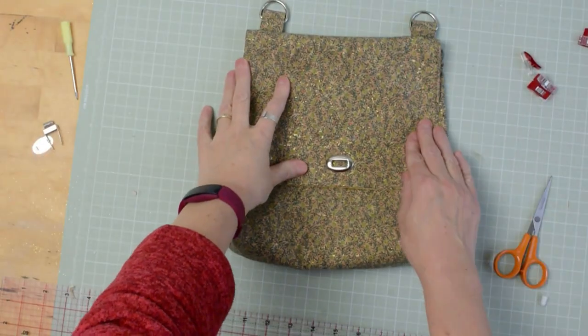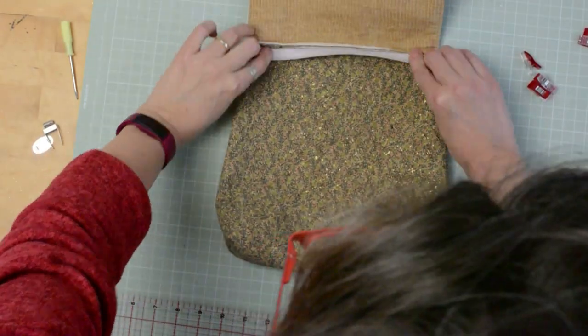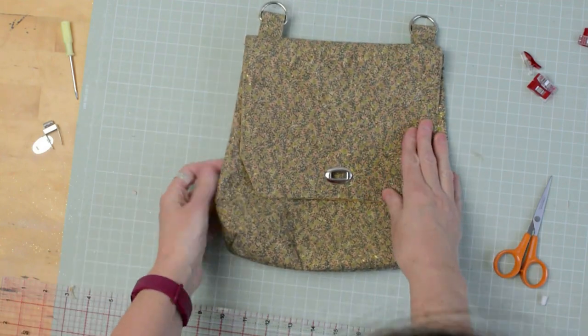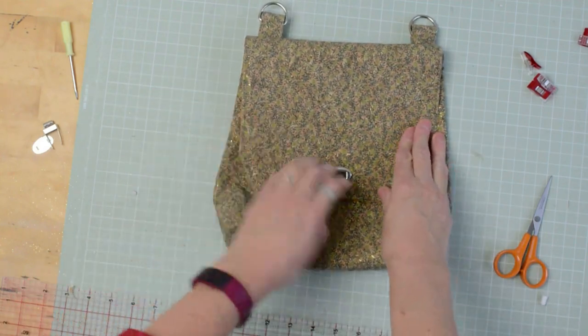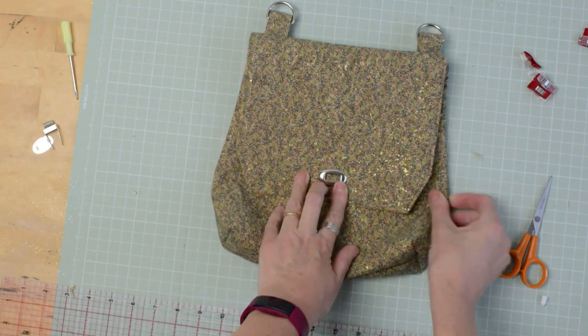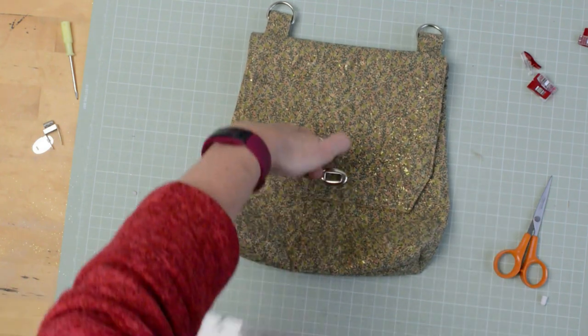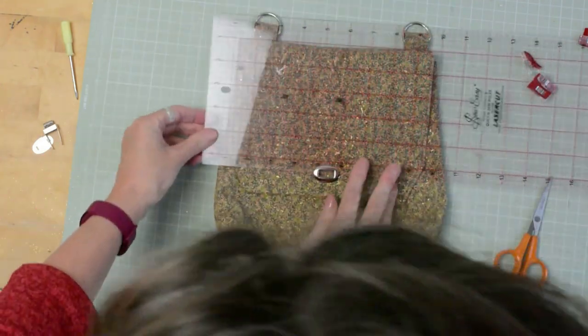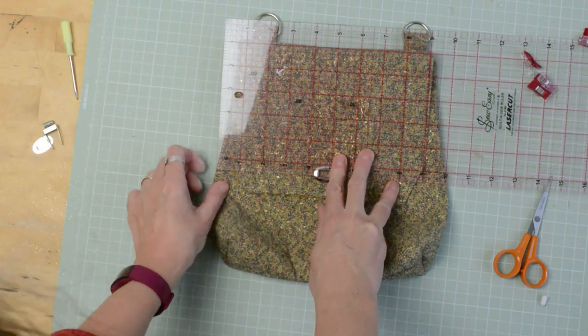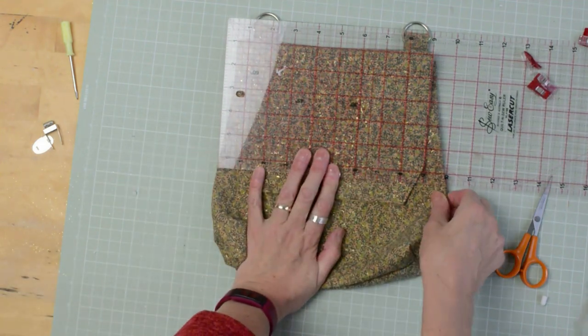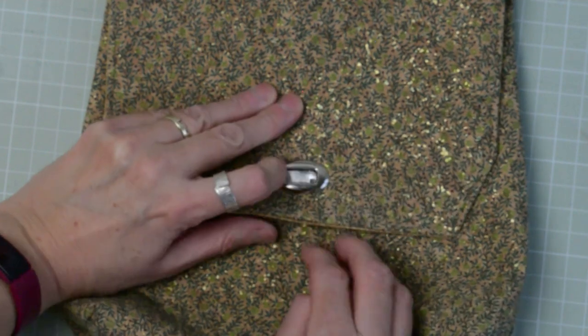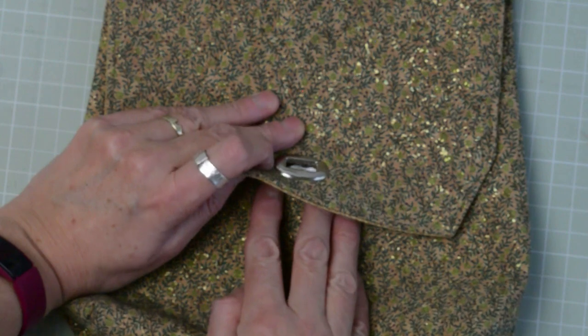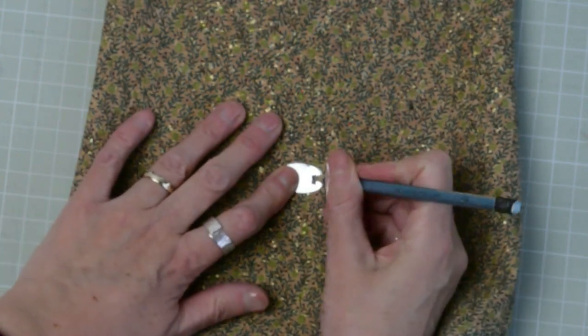Now we're going to work out the position of the other part of the lock. We need to make sure the closing flap is central and we've allowed for the seam allowance. Once you've done that, you can mark through or place your plate through the other side. Align it carefully. And then we're going to mark through where we need to cut to insert the other half of the twist lock.